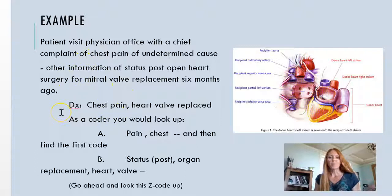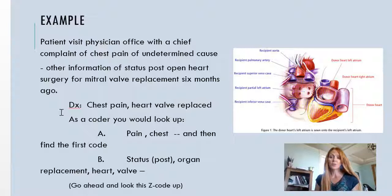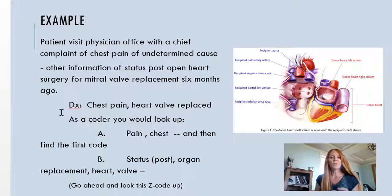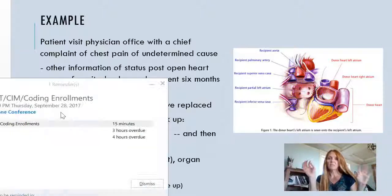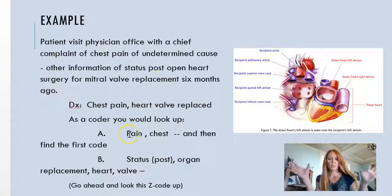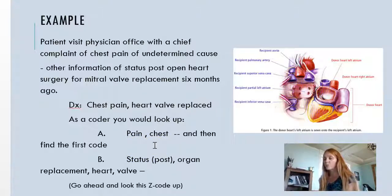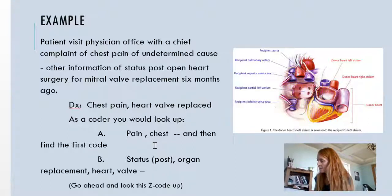Here's an example. Let's say we have a patient who came to the physician office with a chief complaint of chest pain, undetermined cause, and the patient has a status post open heart surgery for mitral valve replacement six months prior. So we have two things going on: a patient with chest pain, and the patient also had a heart valve replacement — but it's a prior one, not a current placement. We're going to code the chest pain by looking it up regularly — opening your index and going to pain, then chest, which is on page 299.